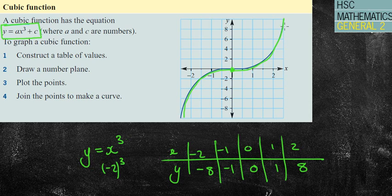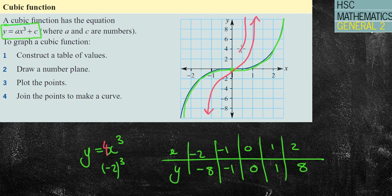So that's pretty much what a cubic looks like — like a parabola, but it cuts halfway through. If you've got a bigger number in front of the x cubed, say 4x cubed, it's going to be a little bit narrower and steeper. If you had something like y equals 2x cubed plus 2, the plus 2 pushes it up to go through the y-intercept at 2.